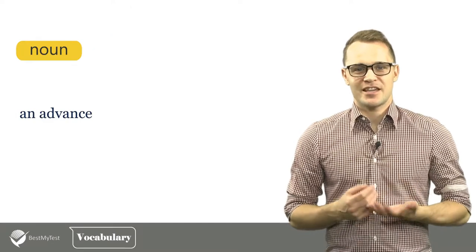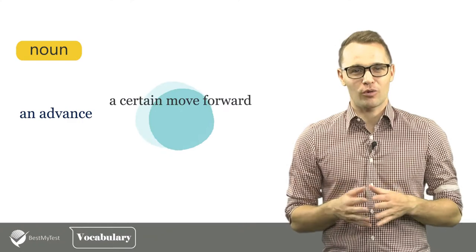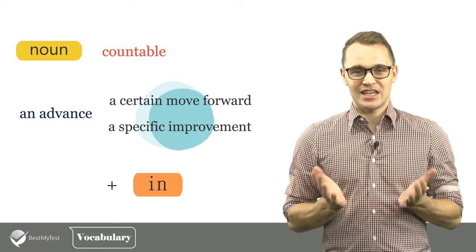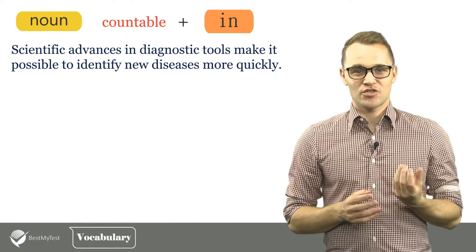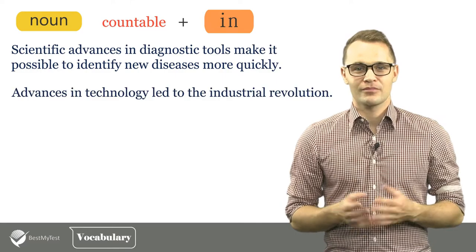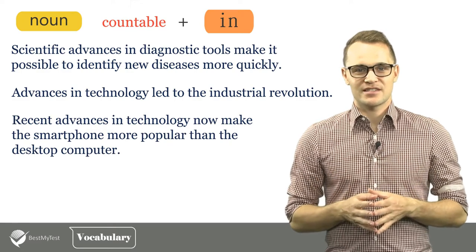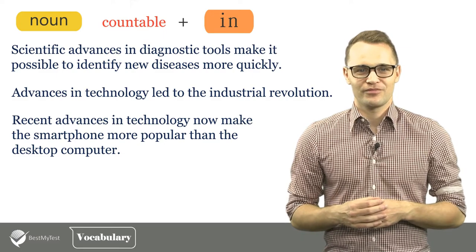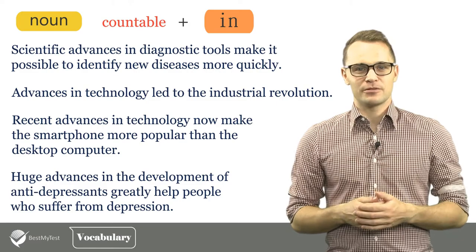The noun advance has the same underlying meaning as the verb to advance. An advance is a certain move forward or a specific improvement. It is a countable noun and is normally used with the preposition IN. For example: 'Scientific advances in diagnostic tools make it possible to identify new diseases more quickly.' 'Advances in technology led to the industrial revolution.' 'Recent advances in technology now make the smartphone more popular than the desktop computer.' 'Huge advances in the development of antidepressants greatly help people who suffer from depression.'